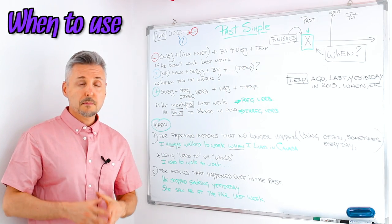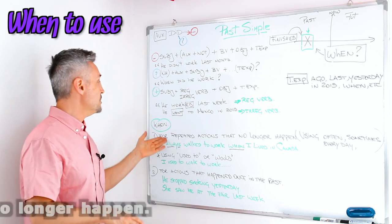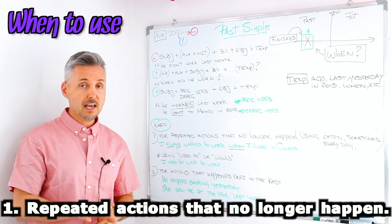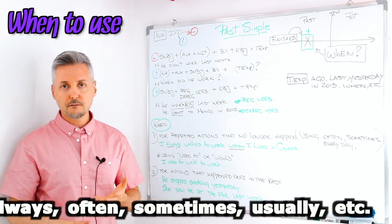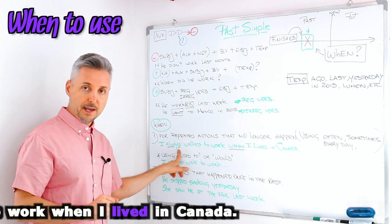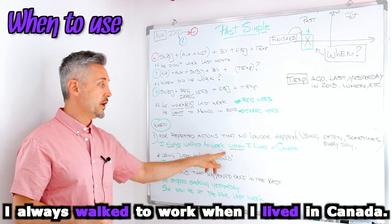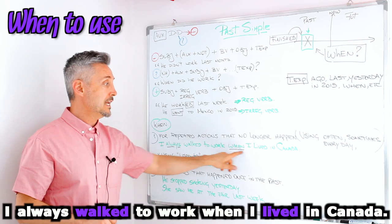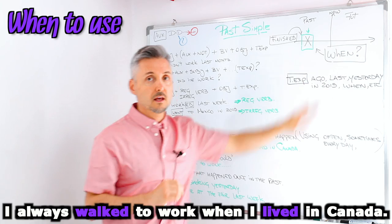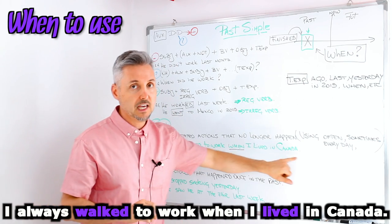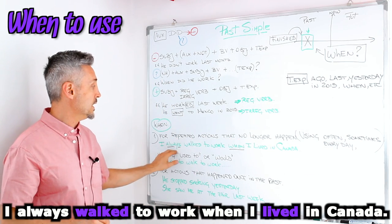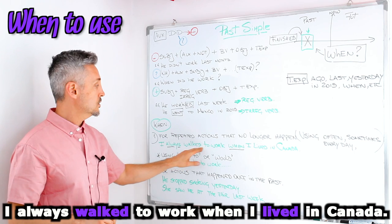So when do we use the past simple or the simple past? For repeated actions that no longer happen. If you want to use it in this case, you need to use always, often, sometimes, usually. Just like my example: I always walked to work when I lived in Canada. When I lived in Canada is the time expression or when, the indicator of time. Then I always, and this is the adjunct always. I always walked to work.